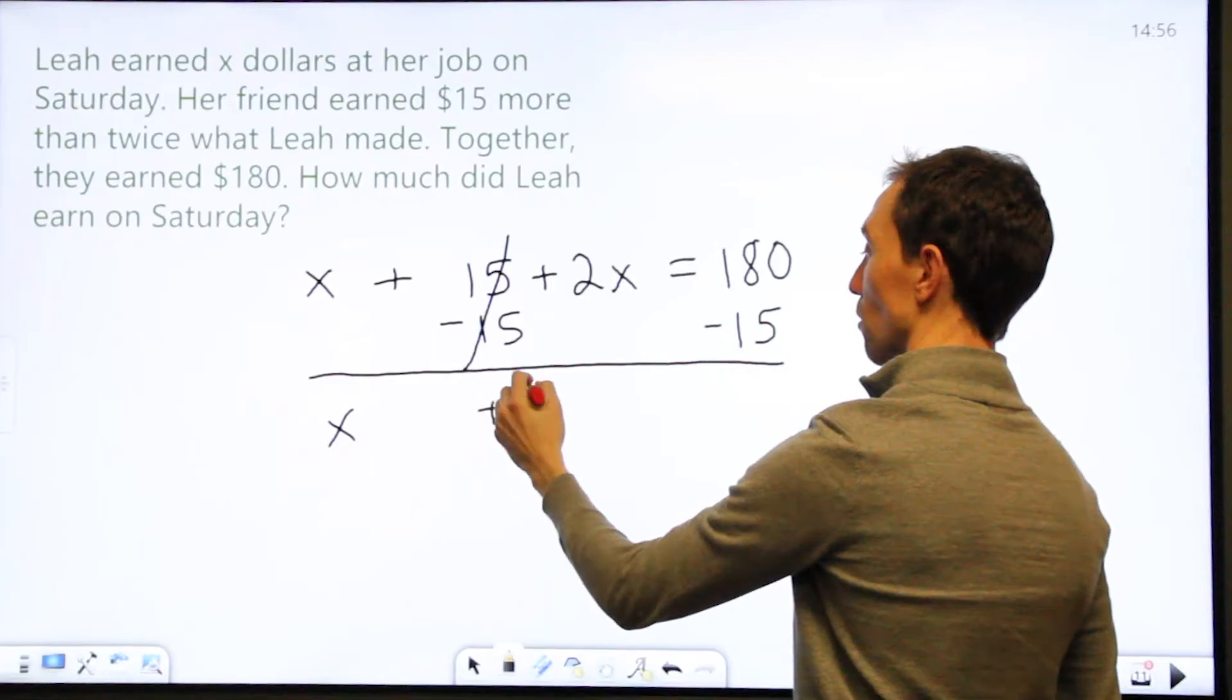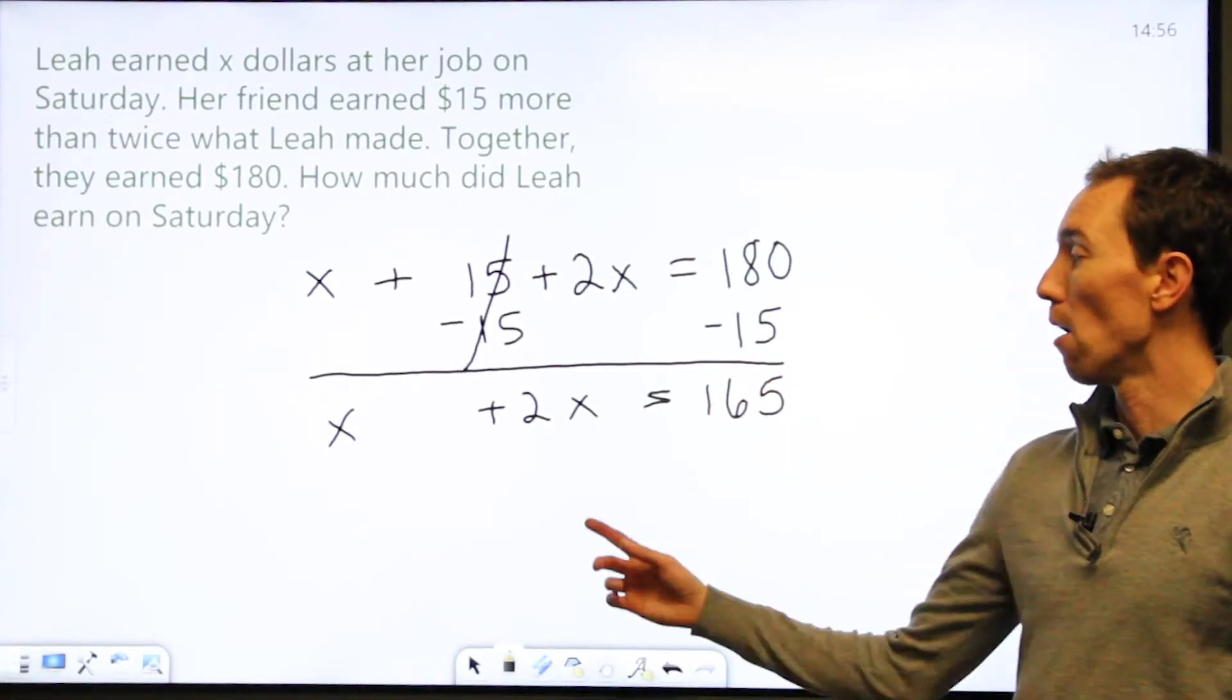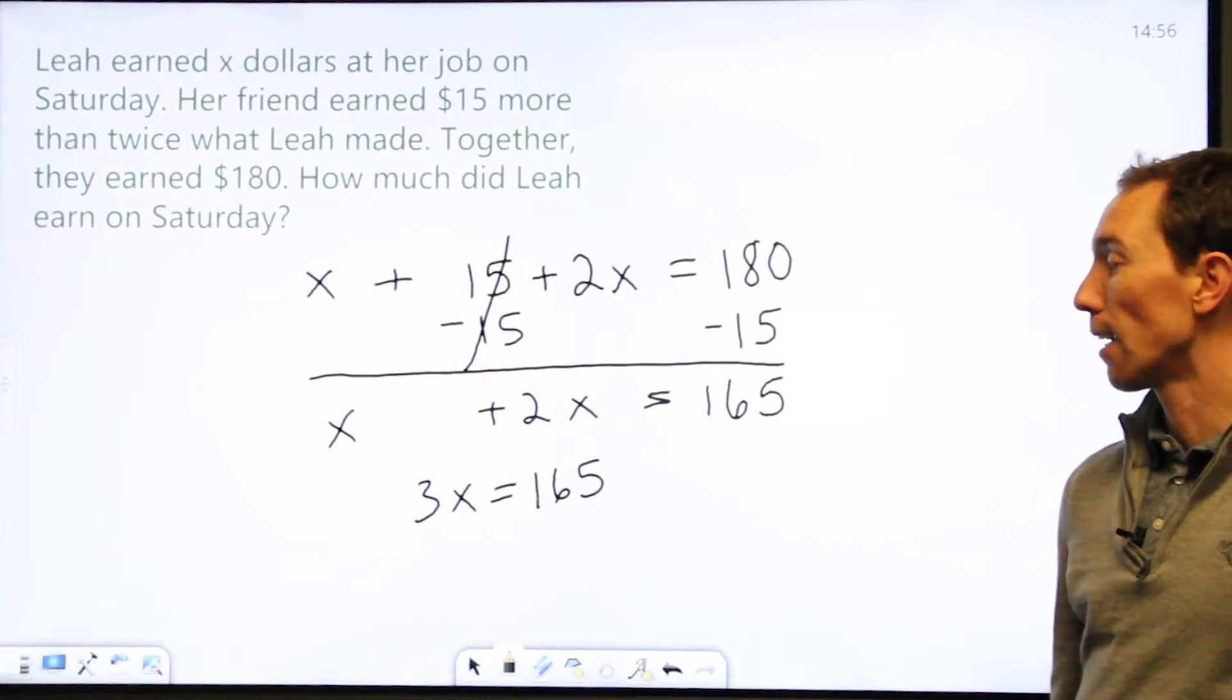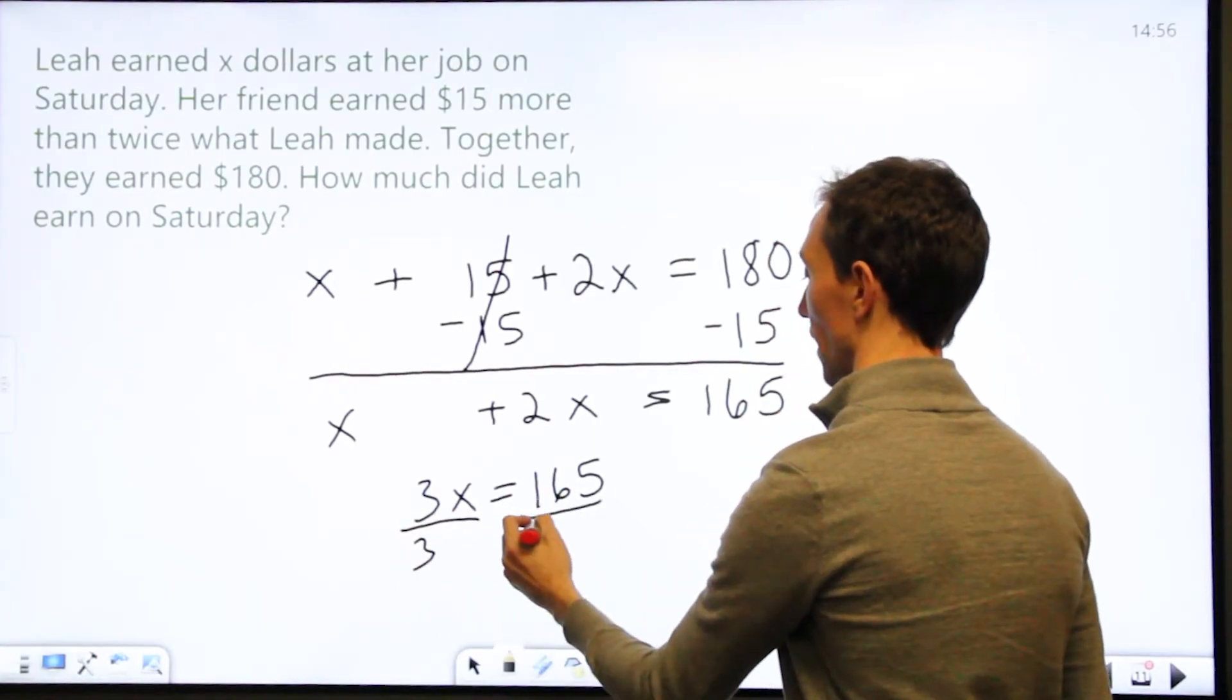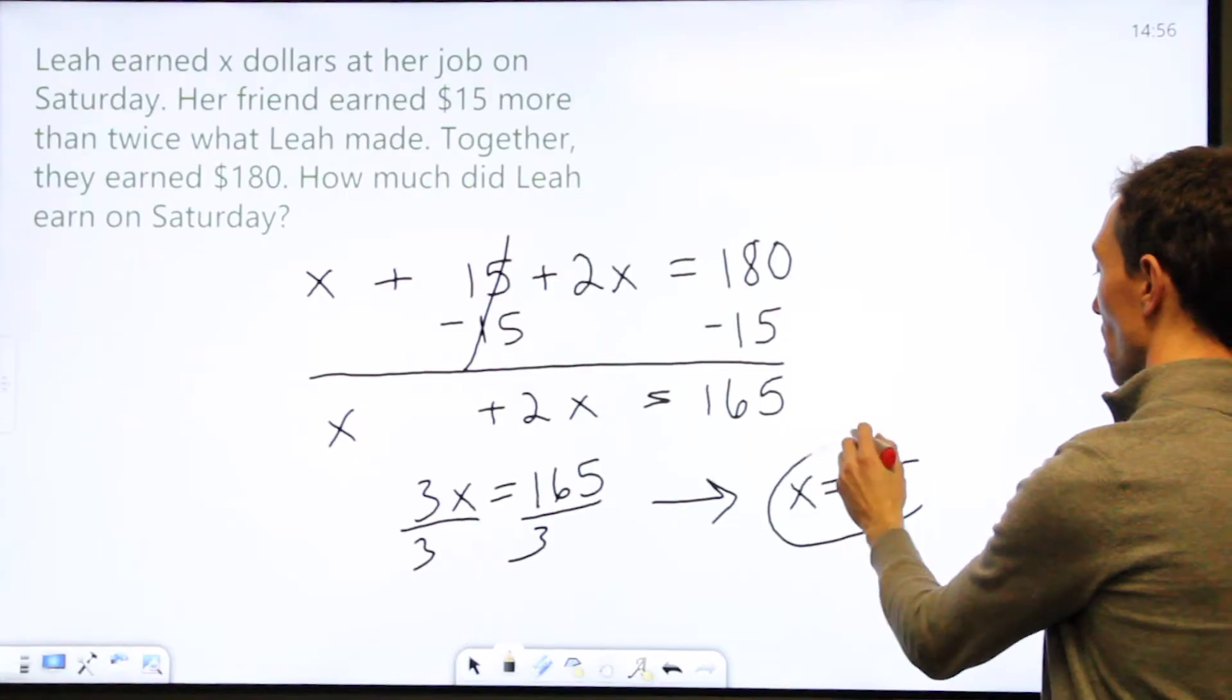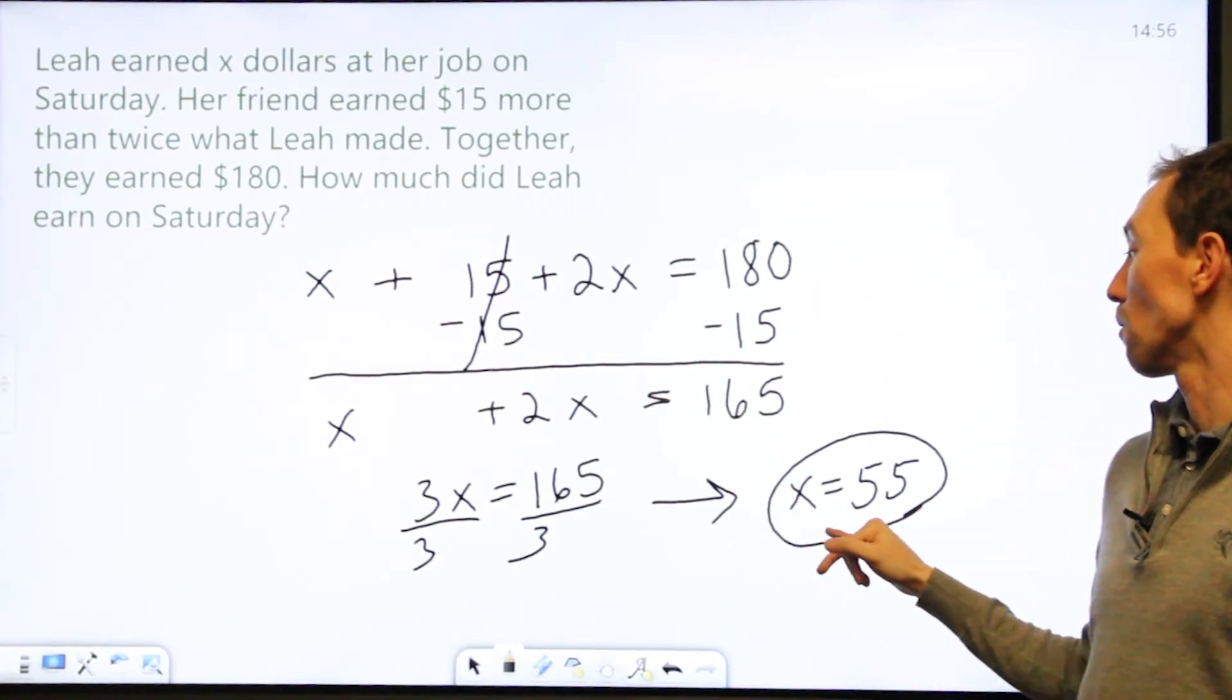Now X plus 2X is going to be 3X equals 165. And then my last step is I'm going to have to divide by 3 because I have X times 3. So to solve it I divide by 3, divide by 3. And then I get my final answer, X equals 55. So X equals 55 is my solution because they're asking how much did Leah earn, and Leah earned X dollars so X equals 55.